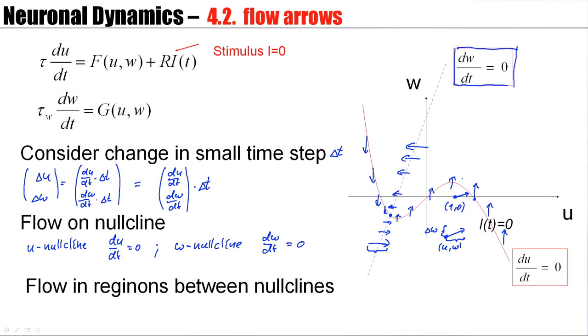Now, what does this mean? This means that if my momentary value of u and w sits here, then the dynamics will move the momentary value upwards. If I sit here, the dynamics will move towards the left. If I sit in between, well, I cannot say exactly what the angle is, but I know that it's some combination of upward and leftward. And so, I can write down the flow in the regions between the nullclines. Approximately, I know roughly the direction of the arrows.